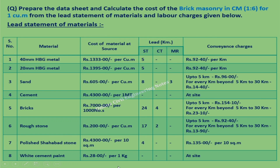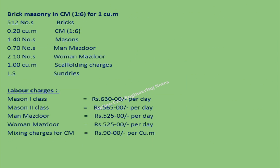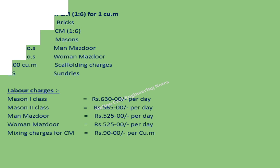Prepare the data sheet and calculate the cost of brick masonry in CM 1:6 for 1 cubic meter from the lead statement of materials and labor charges given. Data for brick masonry in CM 1:6 and labor charges are given. The cost of brick masonry can be calculated by knowing the cost of cement mortar 1:6 and the cost of other materials used for the construction of brickwork.